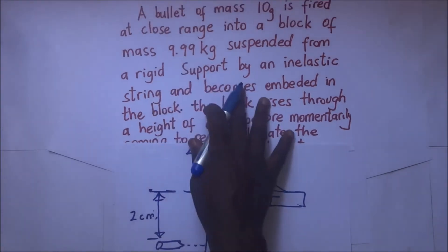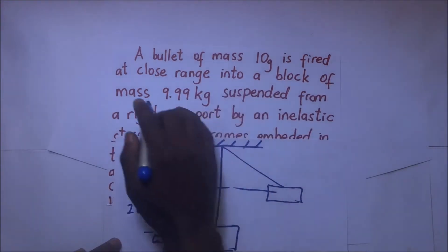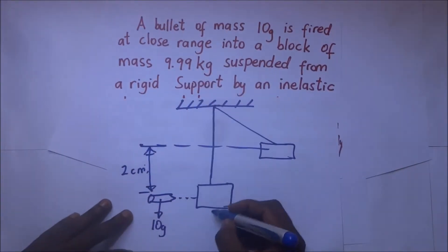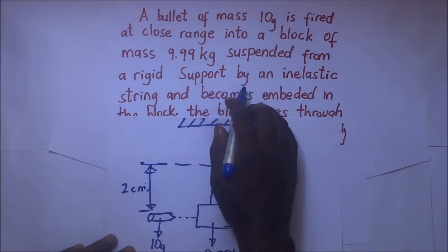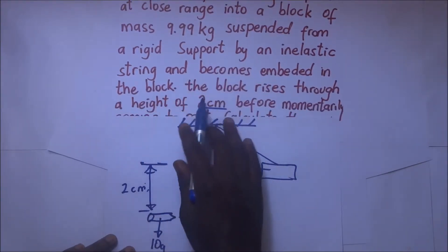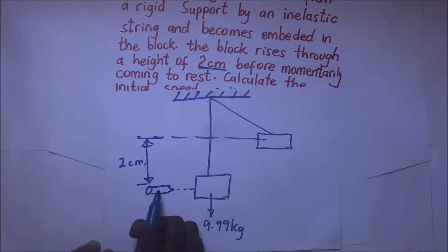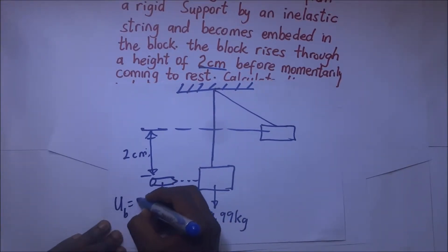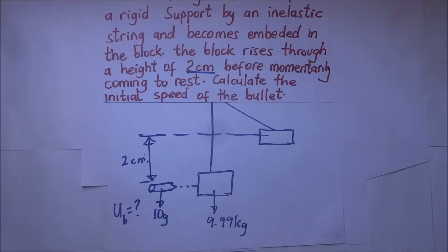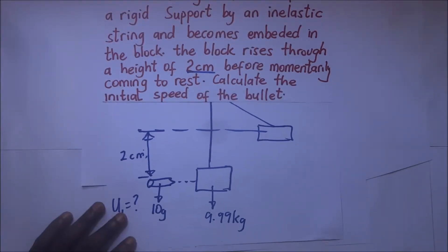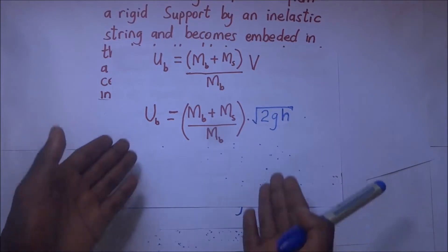We are told that the bullet has a mass of 10 grams, and it is fired at close range into a block of mass 9.99 kilograms. The block is suspended from a rigid support by an inelastic string and becomes embedded in the block. The block raises through a height of two centimeters before it momentarily comes to rest. We need to calculate the initial speed of the bullet, which we call u_b. We can use the formula derived in our previous session and substitute directly.